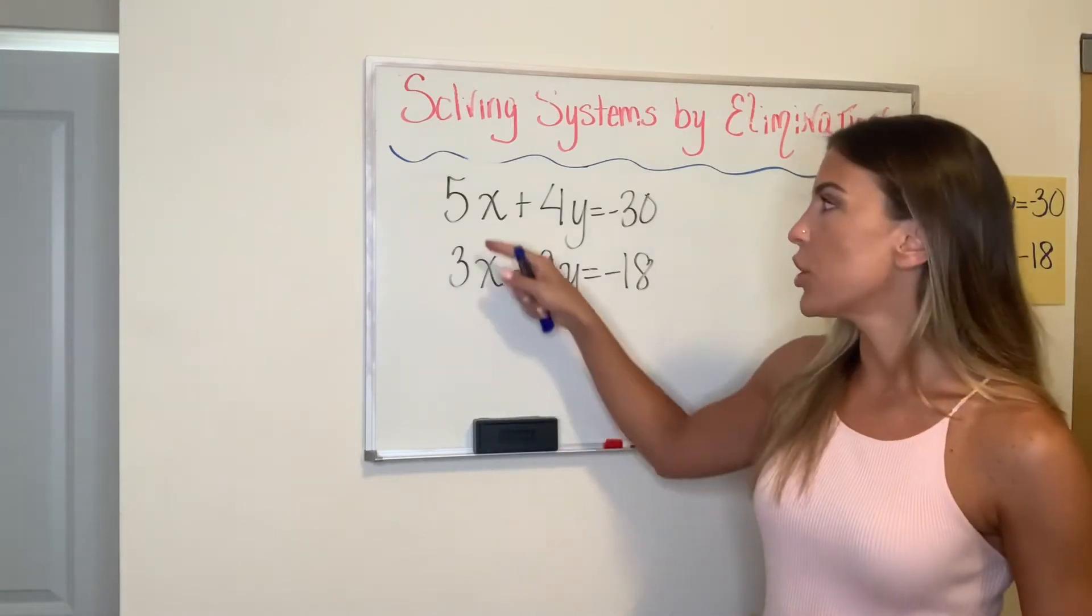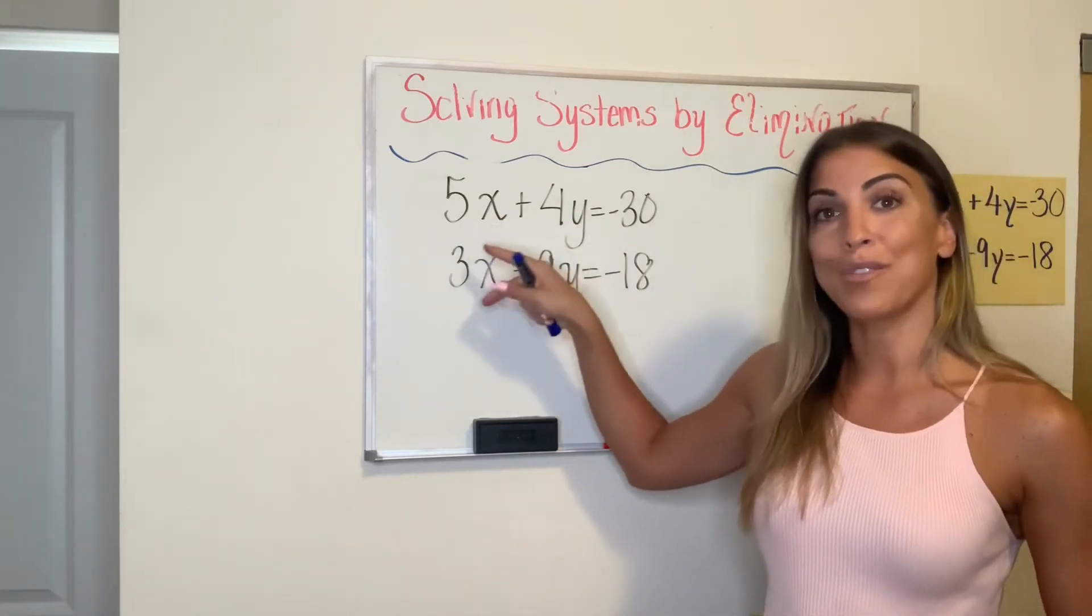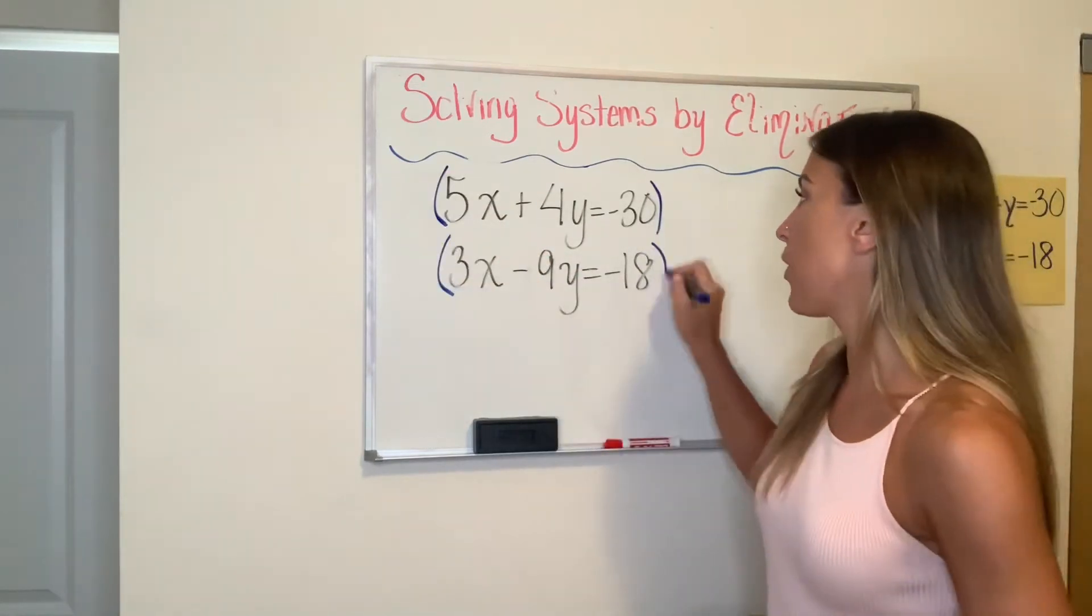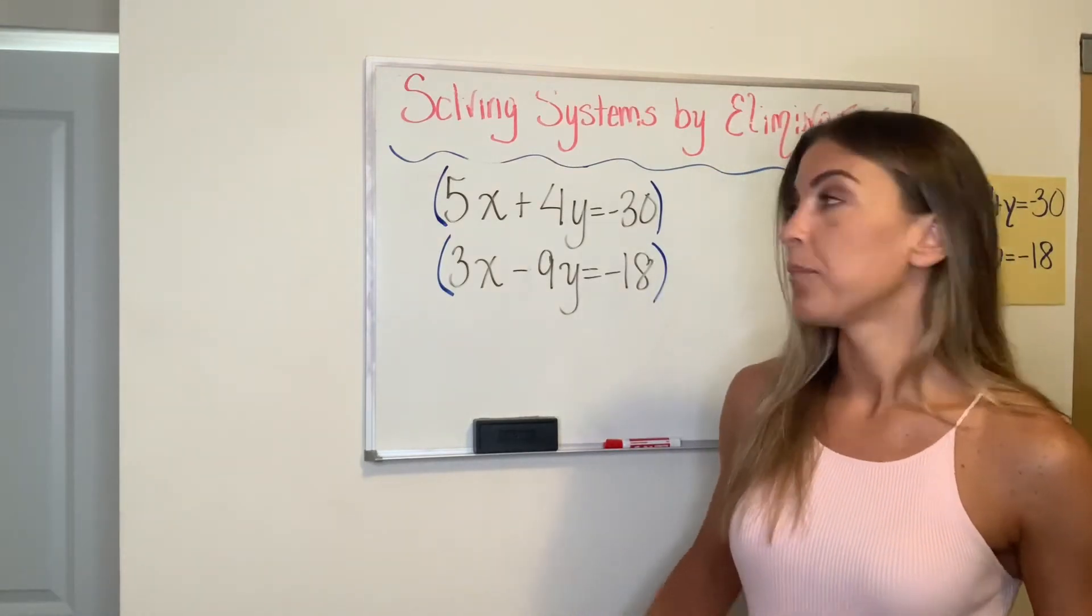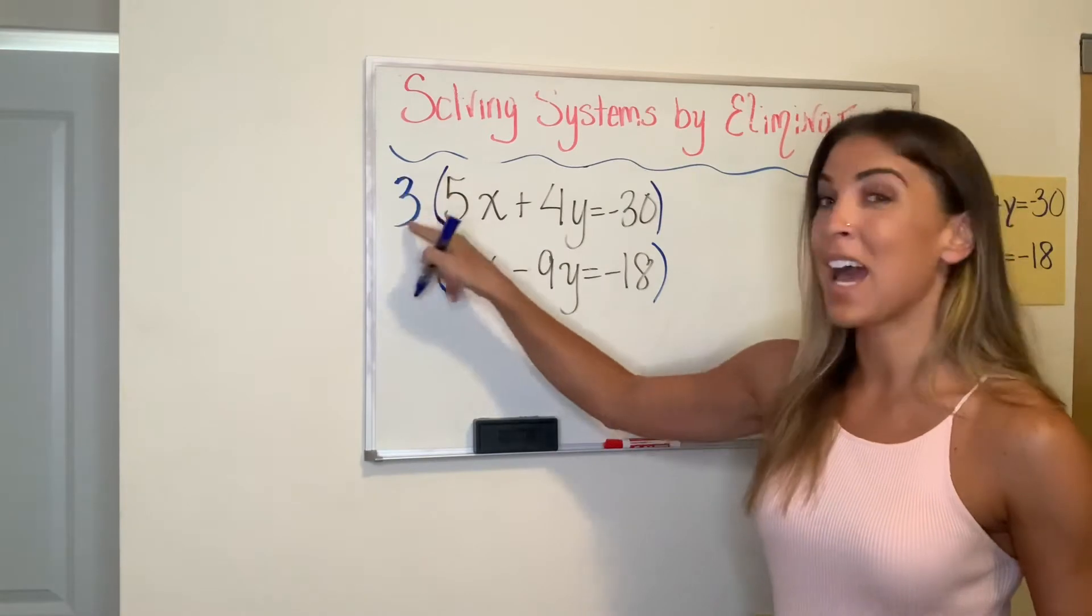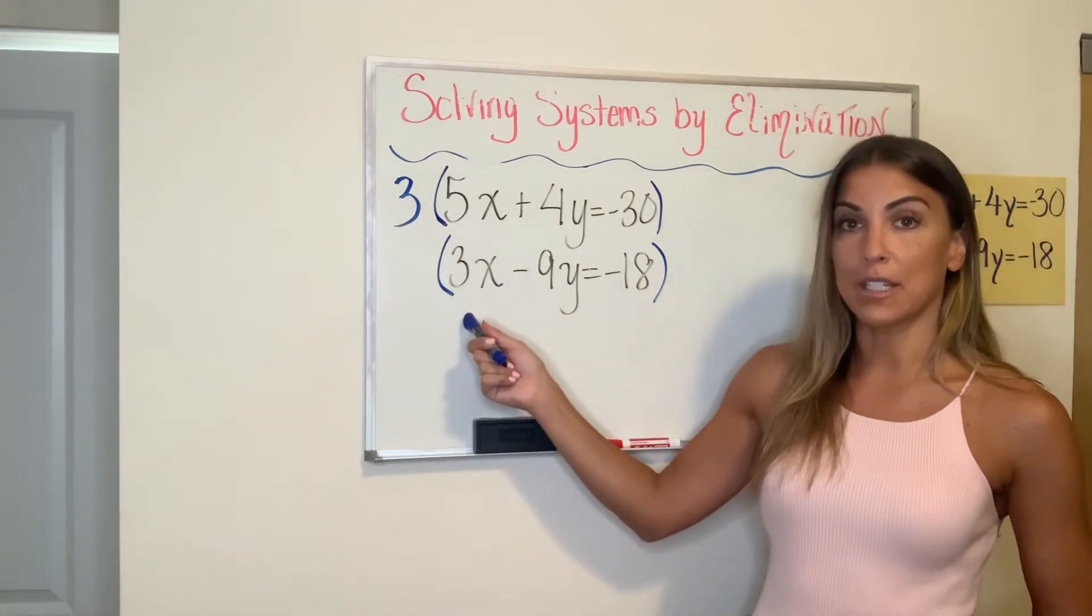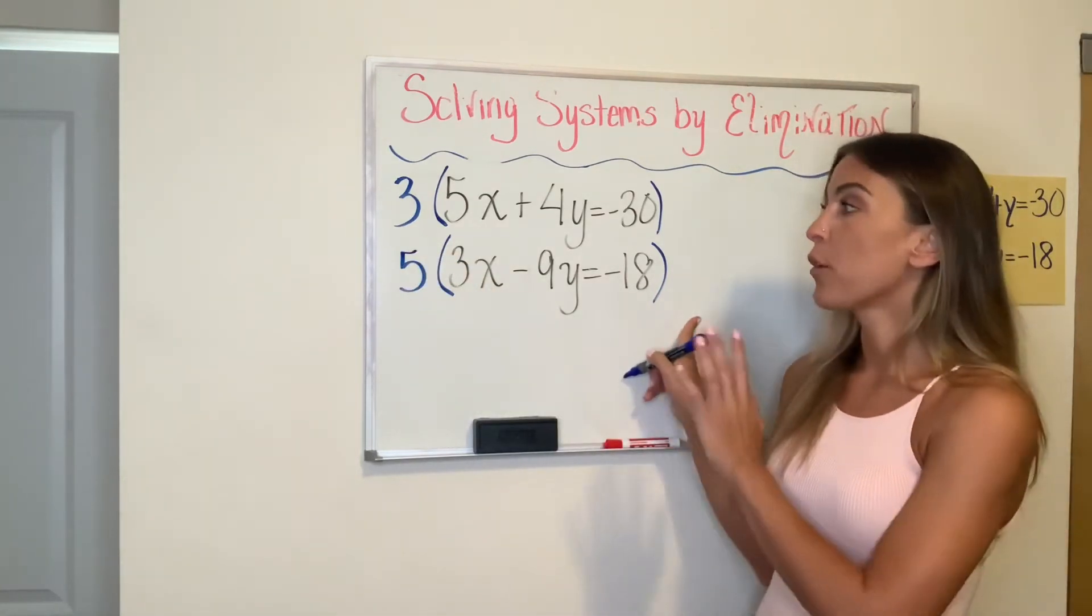So instead of trying to turn these both into a five or both into a three, we're going to turn them both into a 15. But we're going to do that by multiplying both equations by something. So what do I multiply five by to get to 15? Three. So we're going to multiply this entire equation by three. What do I multiply three by to get to 15? Five. So we're going to multiply this entire equation by five.